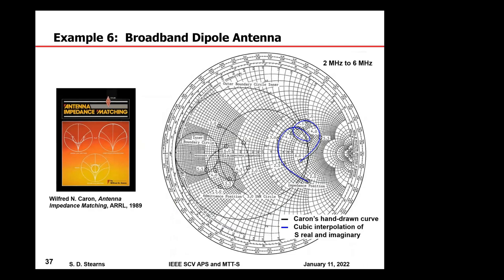Here's a broadband dipole from an old book on impedance matching. The original data was drawn with a French curve, which I put into an S1P file and plotted in a modern EDA circuit analysis program using a cubic spline interpolator — shown as the blue curve. It agrees well with the original black curve, so the French curve technique was quite accurate.